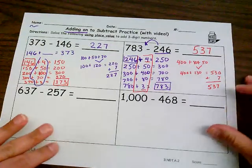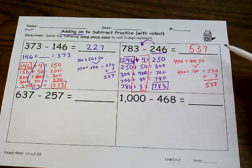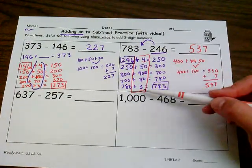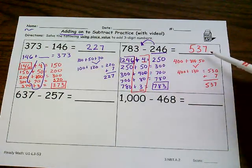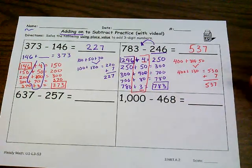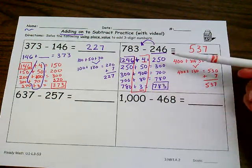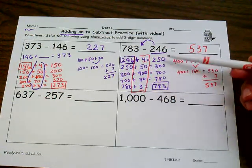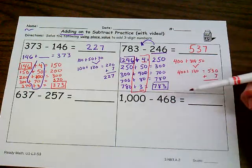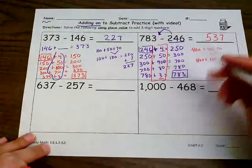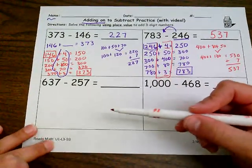Awesome. Alright. So take a look, compare your work to my work. If you did your adding on slightly different, but you still ended up with 537, that's great. There's different ways to add on. If it didn't go so well, pause the video, compare your steps to mine, make some changes, and then let's pause the video and try this one on our own now.